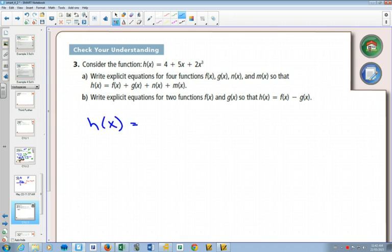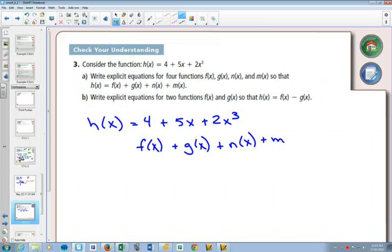Now, h(x) was 4 + 5x + 2x³. There are multiple answers that would be right for this question. For example, we could make, we want f(x) + g(x) + n(x) + m(x). We want four different functions equal to h(x).